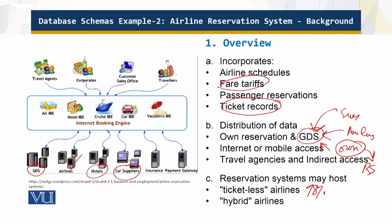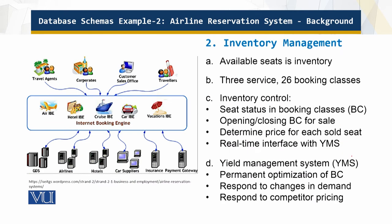You as a traveler are accessing the system, and travel agents are accessing it too — corporates and all of these things are tied together. This is the online airline reservation system we are talking about. There is internet access and indirect access as well. So what is inventory management?